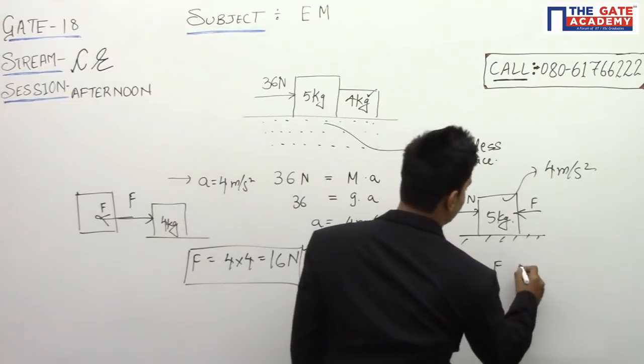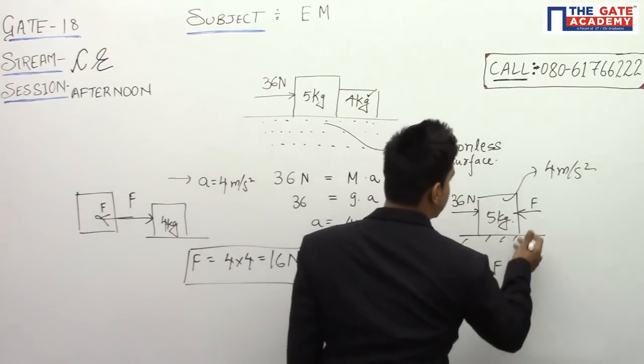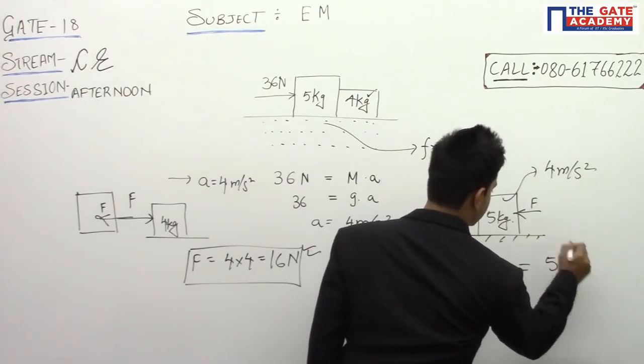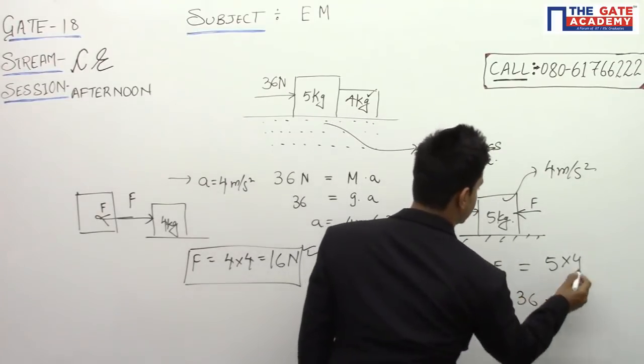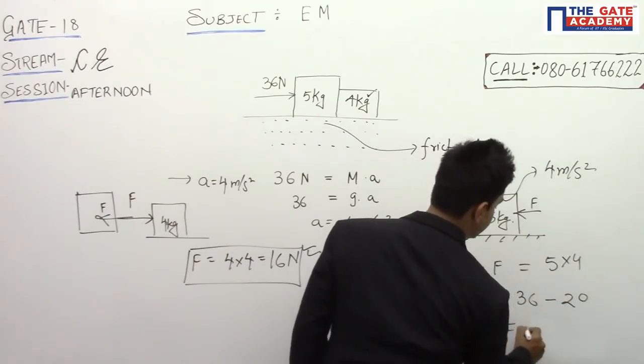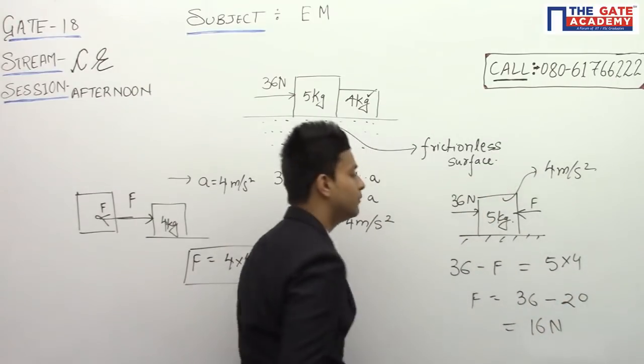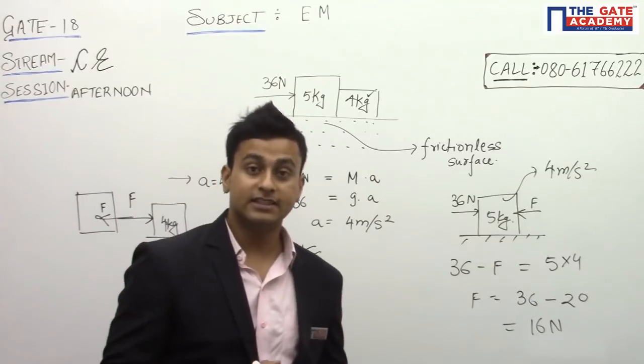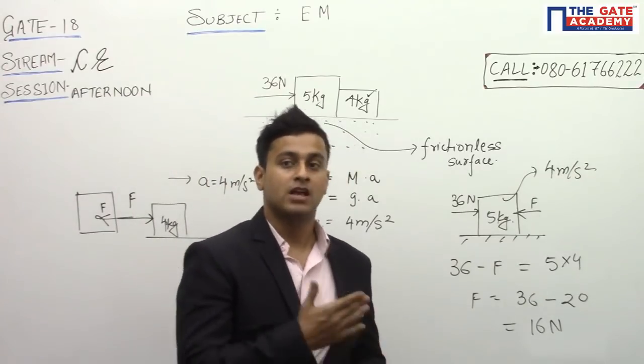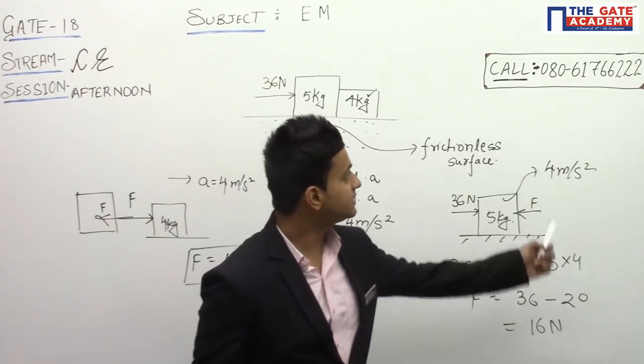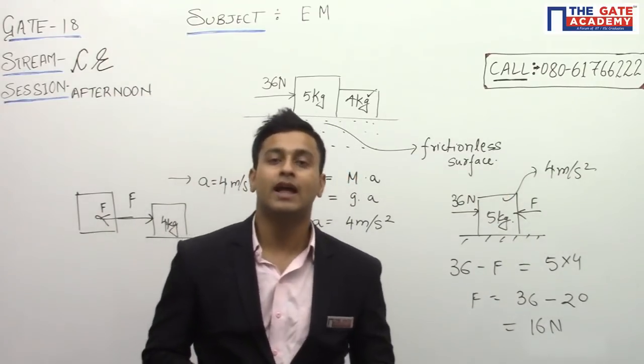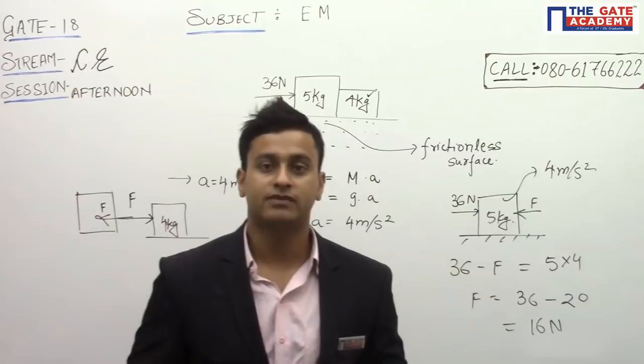will be equal to mass into acceleration, 5 into 4. So F will be equal to 36 minus 5 into 4, that's 20, which equals 16 Newton. So you can get it from both equations. This is how to solve this particular question. Any queries, any doubts, or any inputs from your side, please call on this number. We are ready to help you anytime you want. Thank you.